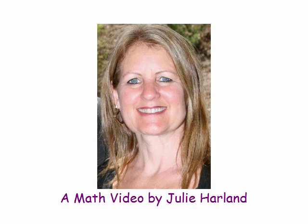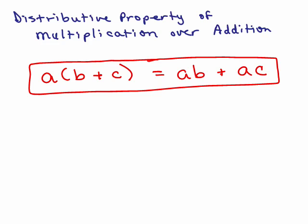Math is cool and you can do it. This is part two of the distributive property multiplication over addition, so this is the property, A times B plus C equals AB plus AC, but it actually works over subtraction as well.